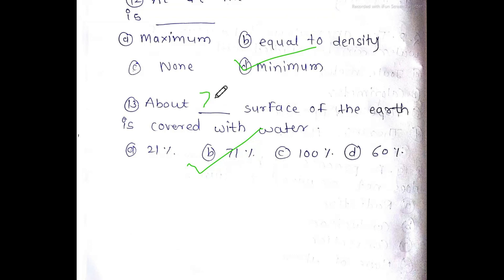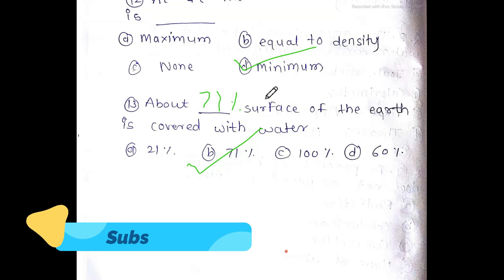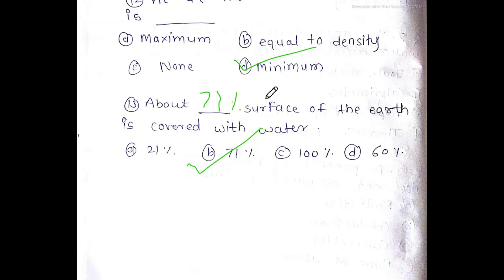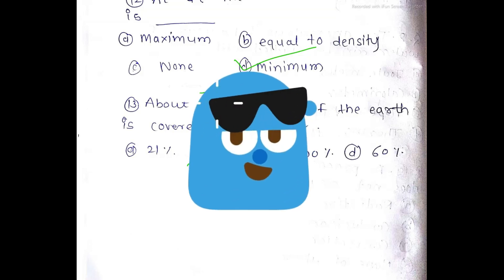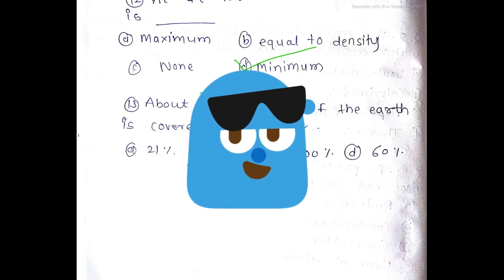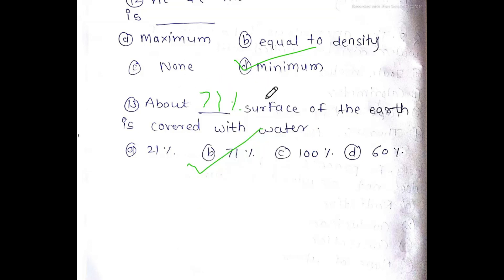Next MCQ: what percentage of the Earth's surface is covered with water? The answer is 71% — option B is correct. Friends, if you found this video helpful, please subscribe to my channel. Notes are available via the Telegram channel link in the description. Please subscribe, comment, share, and like. See you in the next video.